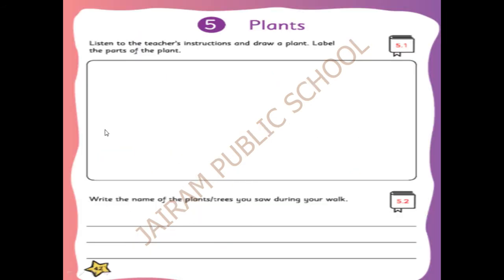Now open your book. You can see the activities. Now take page number 42 in your little thinker book. Listen to the teacher's instruction. You have to listen carefully and draw a plant. Label the parts of the plant - because already I taught you the parts of the plant, now you have to draw and label it. This is activity 5.5. First you have to draw it. Let us see how we have to draw.